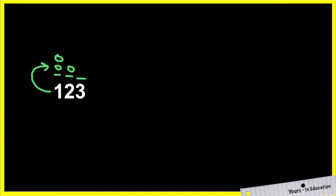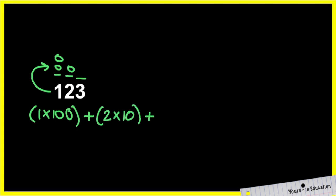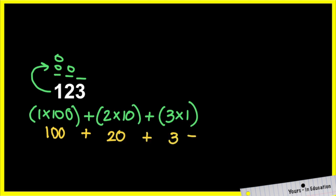We're going to multiply the groups of the numbers by the place value of each digit. So we have 1 times 100, because I have 1 group of 100, plus 2 groups of 10, plus 3 groups of 1. If I add that: 1 times 100 is 100, plus 2 times 10 is 20, plus 3 times 1 is 3, and it's 123. That's the answer, as simple as that.